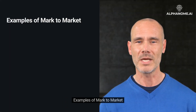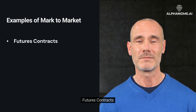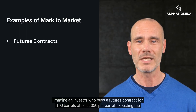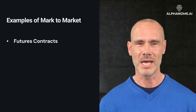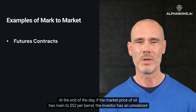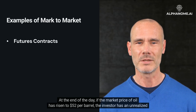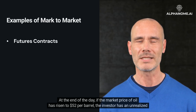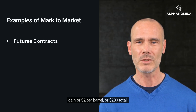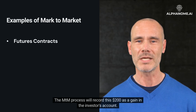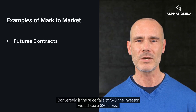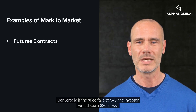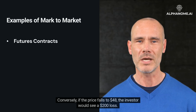Examples of Mark-to-Market. Futures contracts: imagine an investor who buys a futures contract for 100 barrels of oil at $50 per barrel, expecting the price of oil to rise. At the end of the day, if the market price of oil has risen to $52 per barrel, the investor has an unrealized gain of $2 per barrel, or $200 total. The MTM process will record this $200 as a gain in the investor's account. Conversely, if the price falls to $48, the investor would see a $200 loss.